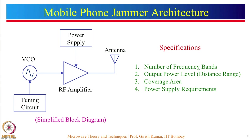The specifications include the number of frequency bands that can be jammed, the output power level specifying the distance range covered, and the coverage area which depends on the directional properties of the antenna. Power supply requirements change depending on the output power level and distance range to be covered.